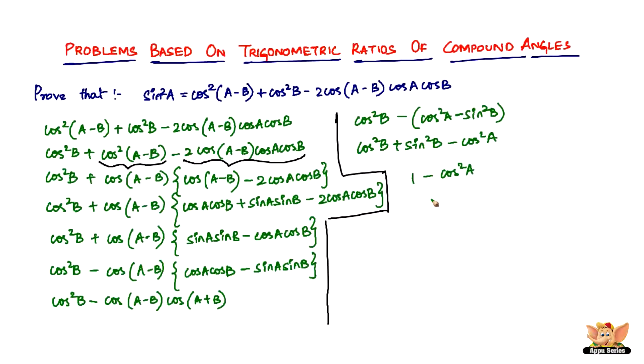So 1 - cos²A is nothing but sin²A. And here we have LHS. We started off with RHS and we've ended at LHS.